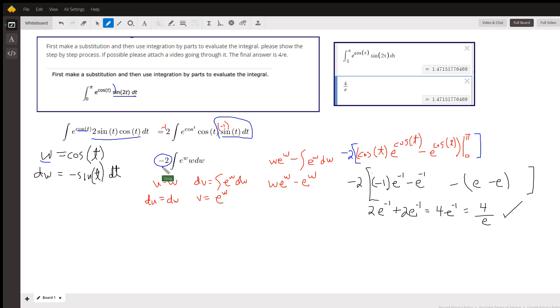Now after the w substitution I get negative 2 times e to the w. This should have been in parentheses. E to the w because w is the cosine of t, this cosine of t is w, and this negative sine of t dt is dw.